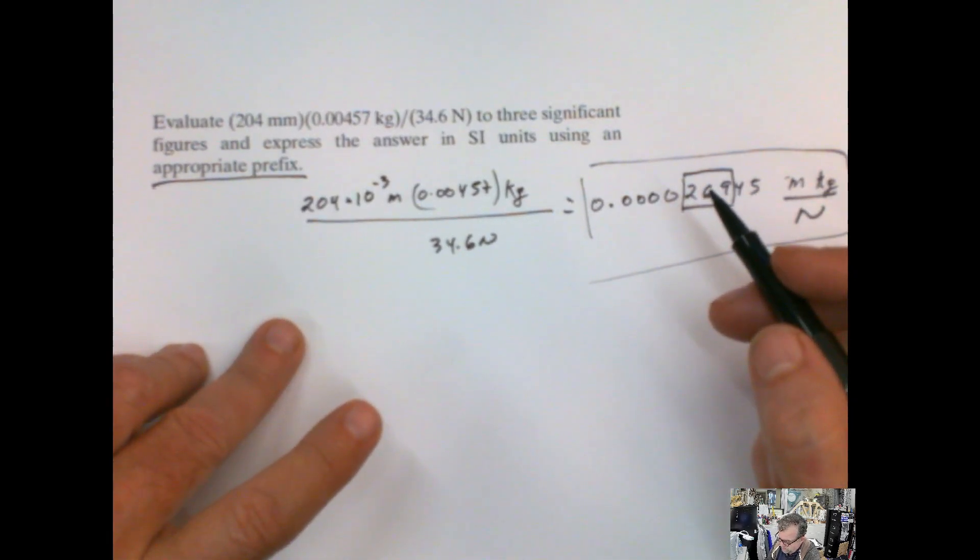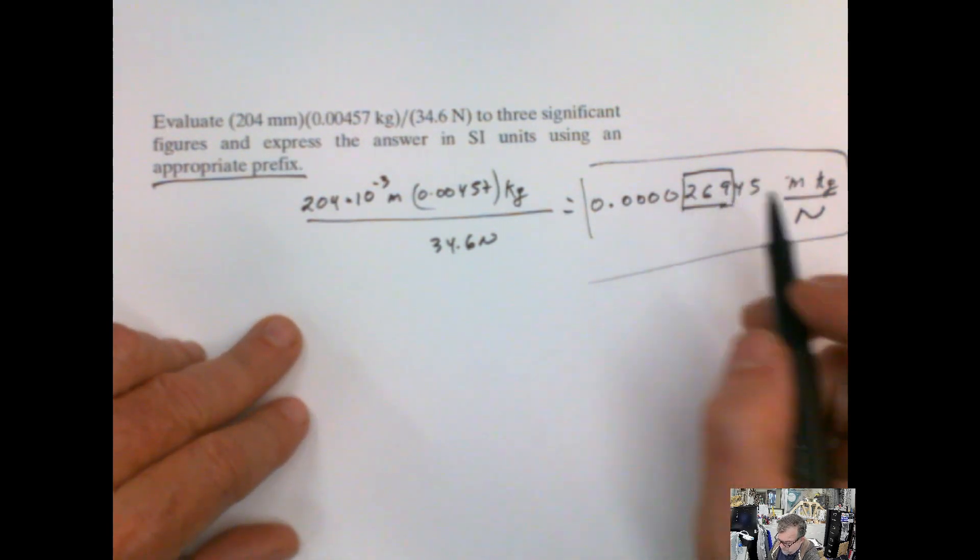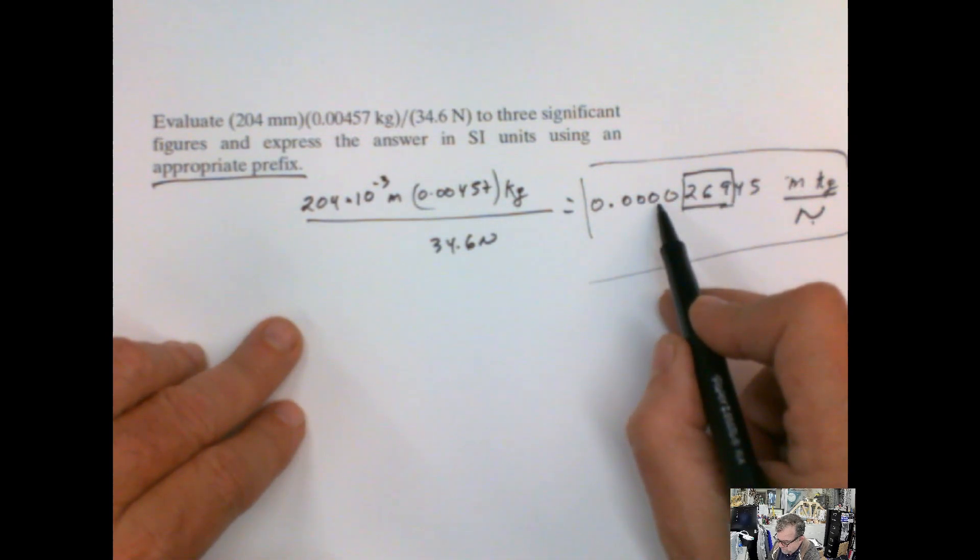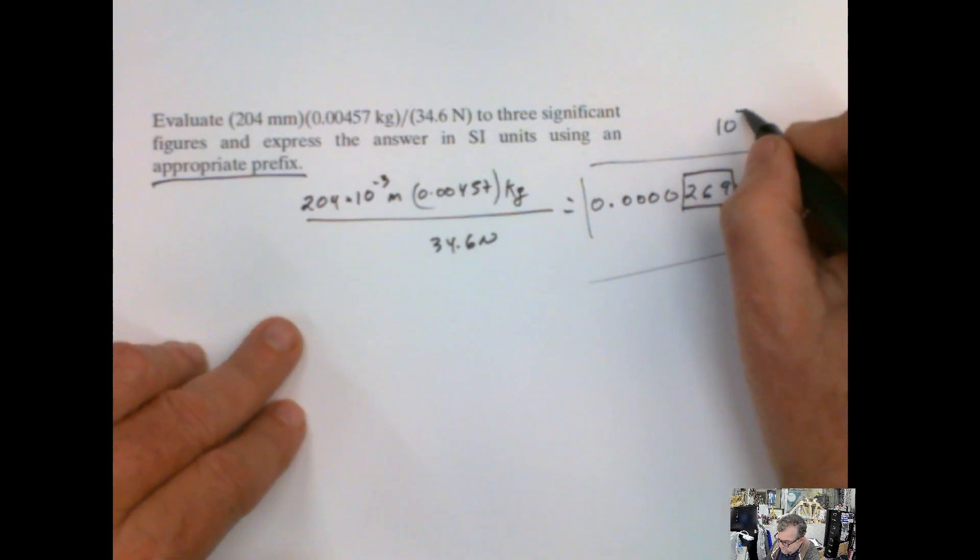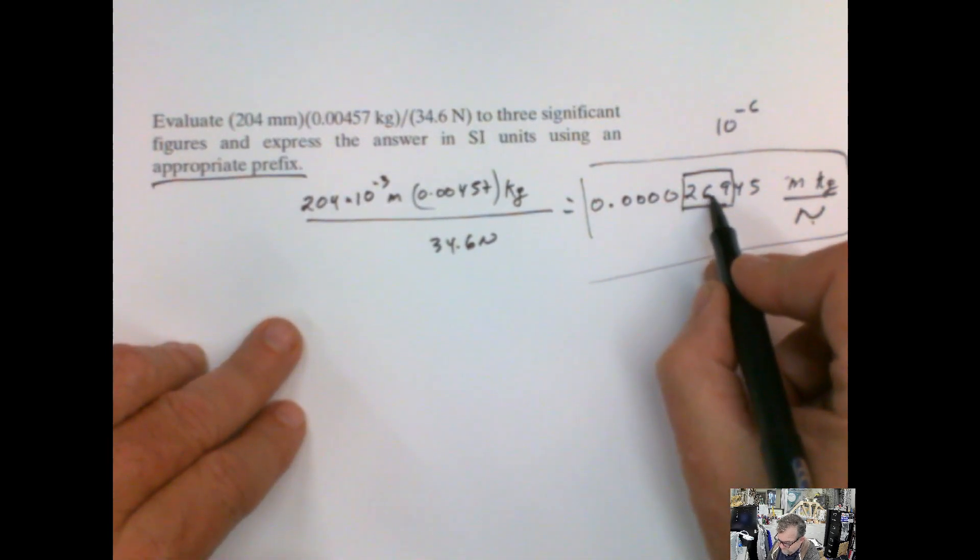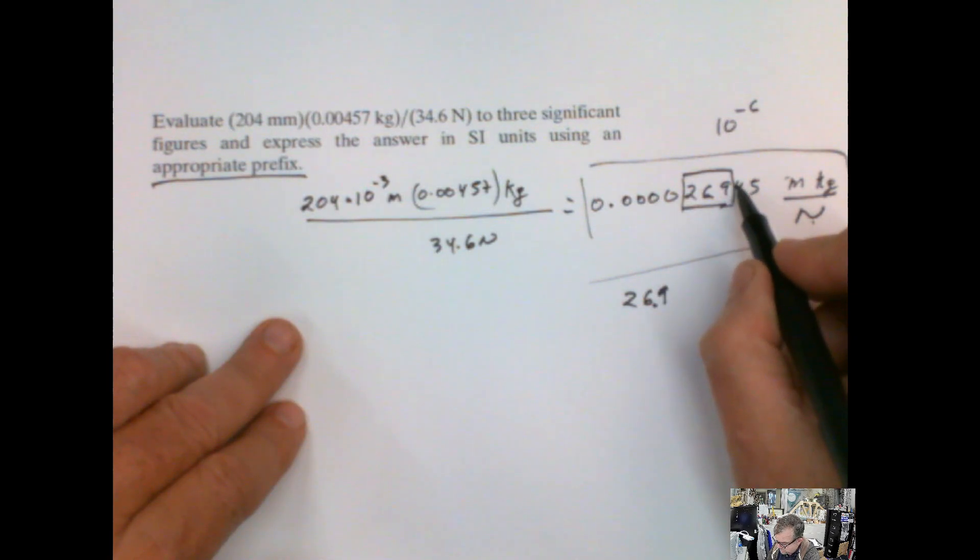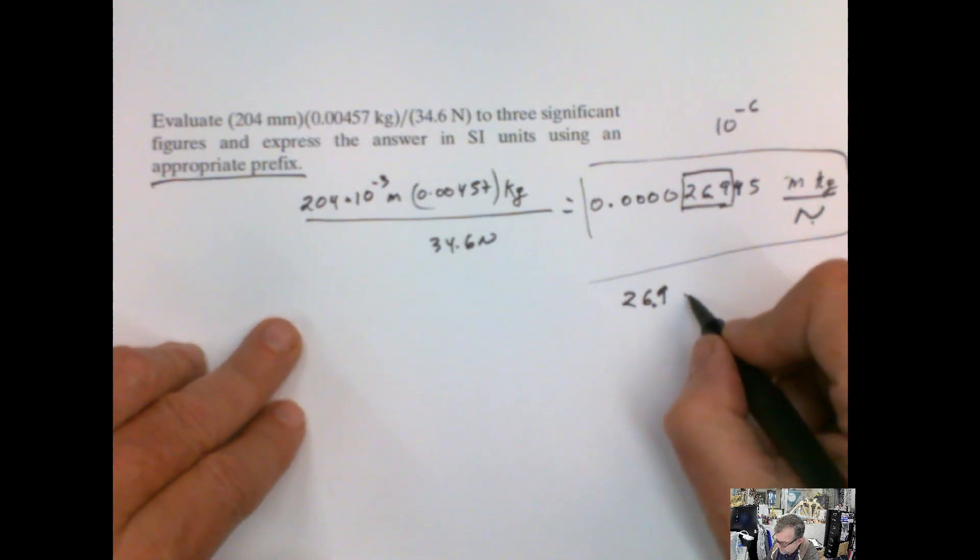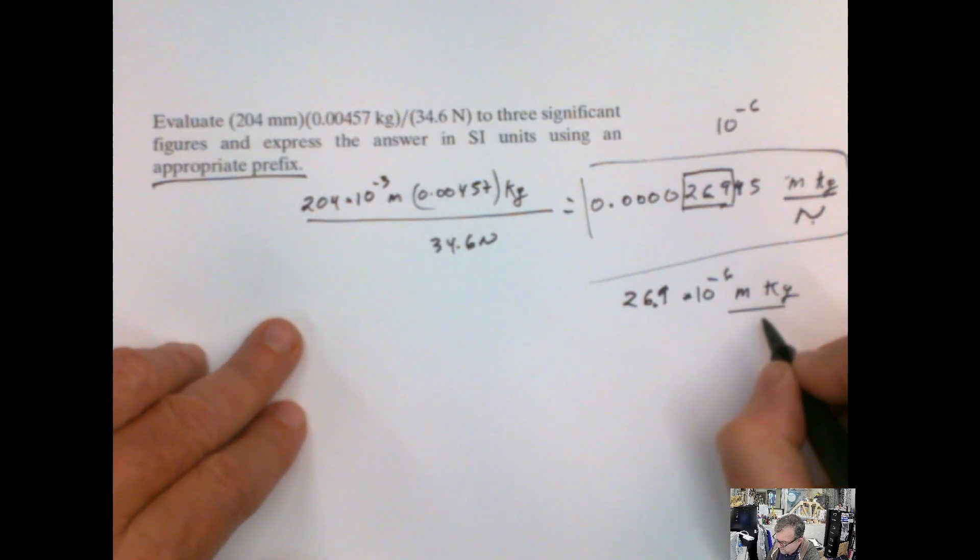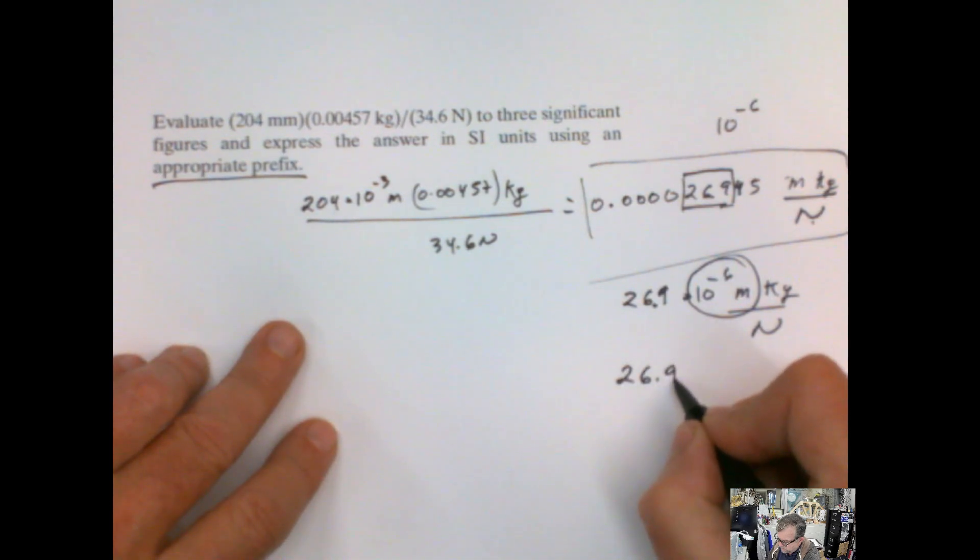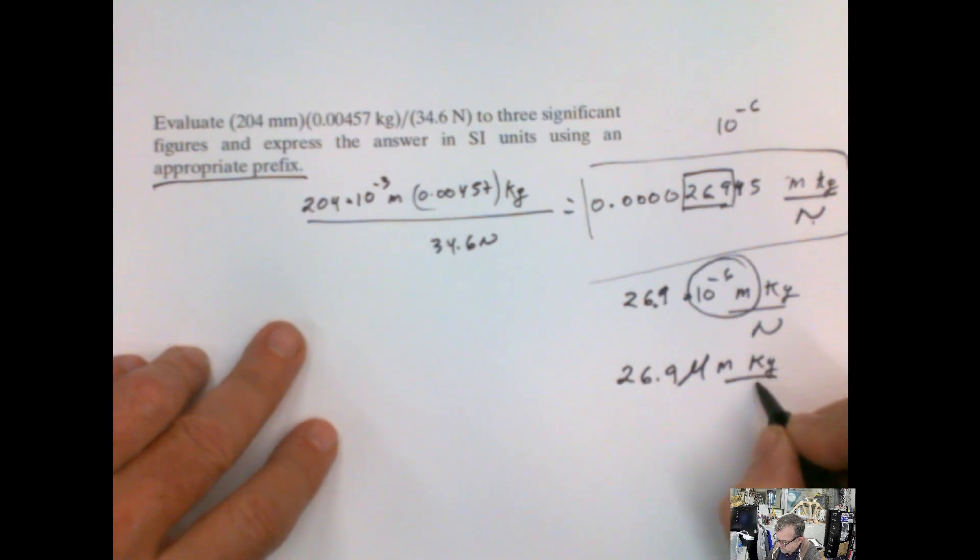So what are the prefixes that we know? We know, or we should know. Millimeters, remember kilogram is staying like that. Newton definitely has to stay like that, because it's in the denominator. So I have to tamper with this meter here. So it would be millimeter, but then it would be three zeros. What if I made it micrometer, which is 10 to the negative 6? So if I express this in a power of 10 to the negative 6, 1, 2, 3, 4, 5, 6, that would be 26.9. Remember, it's 0.9, because this is not bigger than 5. 26.9 times 10 to the negative 6 meter kilograms divided by newton. 10 to the negative 6 meters is a micrometer. So 26.9 micrometer kilogram divided by newton.